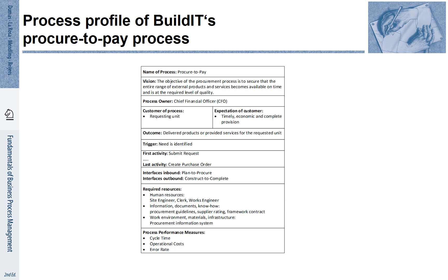There is a desired outcome: the delivered products or provided services of the requesting unit are available. The process is triggered by a need identified. A sequence of important activities can be listed, from submitting the request towards creating the purchase order. Technical interfaces are described inbound and outbound. Required resources are listed, such as human resources, informational resources or infrastructural resources. The process also relates to process performance measures — in this case, cycle time, operational cost and error rate.